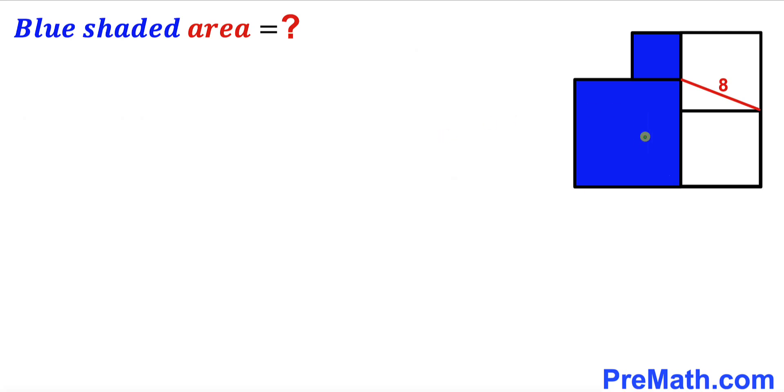Welcome to PreMath. In this video, we have four squares put together as you can see in this diagram. These two white squares are identical, and this red diagonal length is 8 units. Our task is to calculate the area of this blue shaded region.